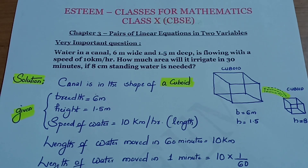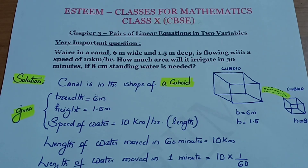We consider the canal in the shape of a cuboid. The cuboid has dimensions: length, breadth, and height. The breadth is 6 meters wide and the depth — that is, the height of the canal — is 1.5 meters.